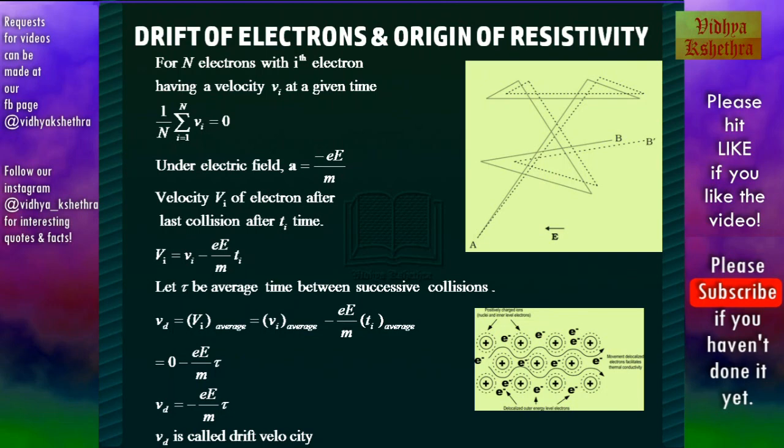Now under electric field, electrons are accelerated. And this acceleration is a = -eE/m, which is the charge of the electron times E (the electric field applied) divided by m.